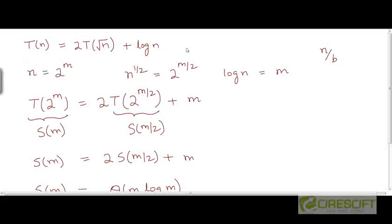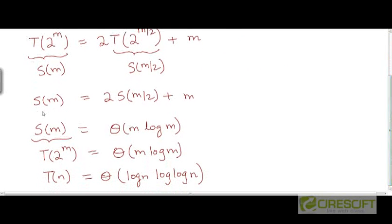The original recurrence was not directly solvable, at least not using the techniques we have discussed. So what we did was a change of variables — by substituting n = 2^m, we were able to make the argument a function of m, particularly making the square root argument become 2 to the power m/2. This allowed us to transform the recurrence into something very familiar.